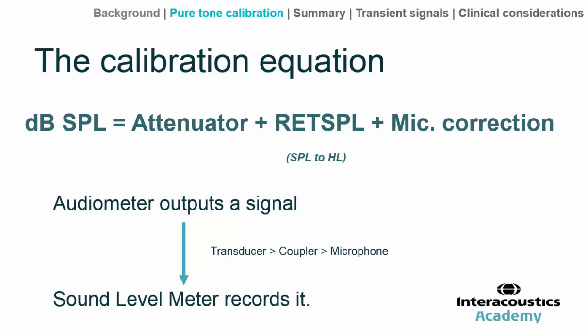To derive the target SPL, we refer to the calibration equation: target level in SPL equals the attenuator dial setting on the audiometer, plus the Reference Equivalent Threshold Sound Pressure Level, plus any correction factors required for that particular microphone and coupler. With this information we derive the target SPL, then use the sound level meter to check what it actually measures, confirming whether the target level and frequency match the reading.